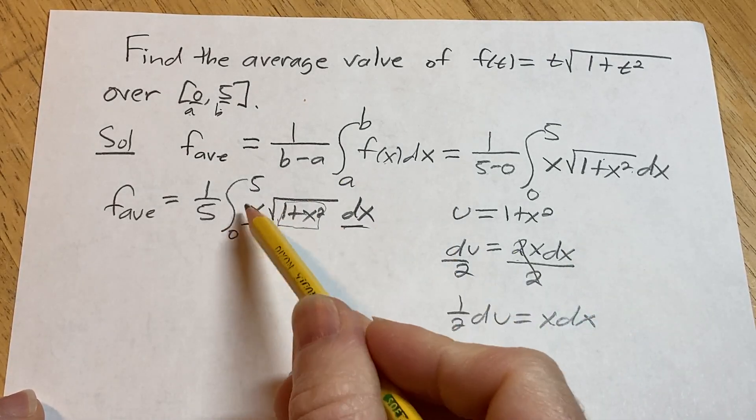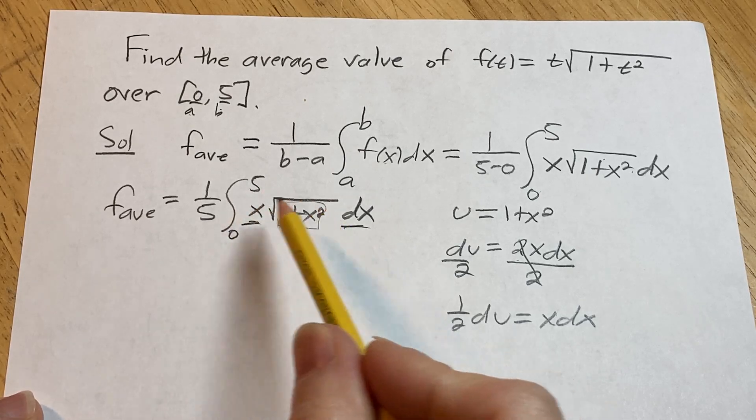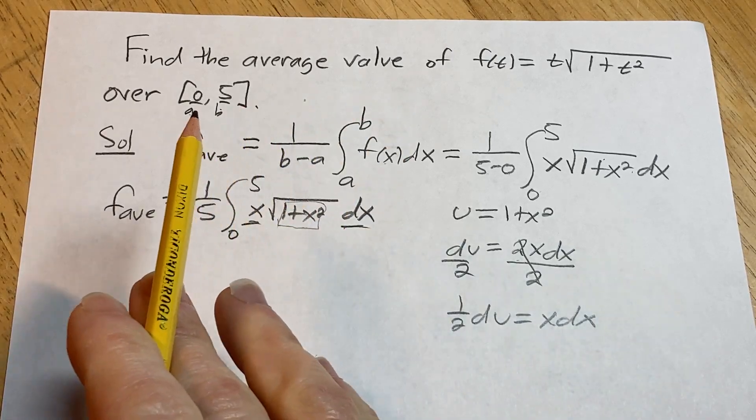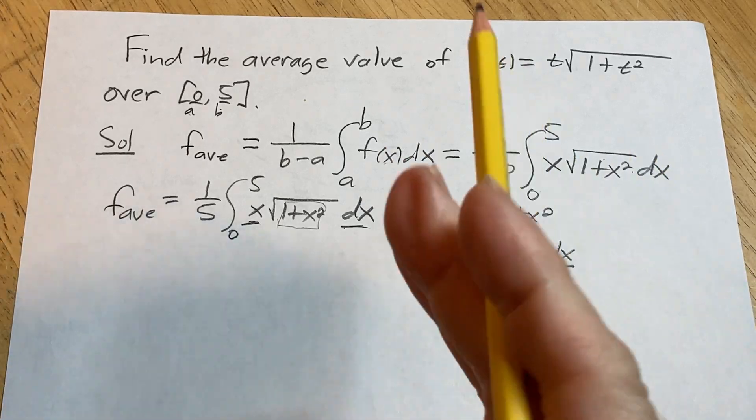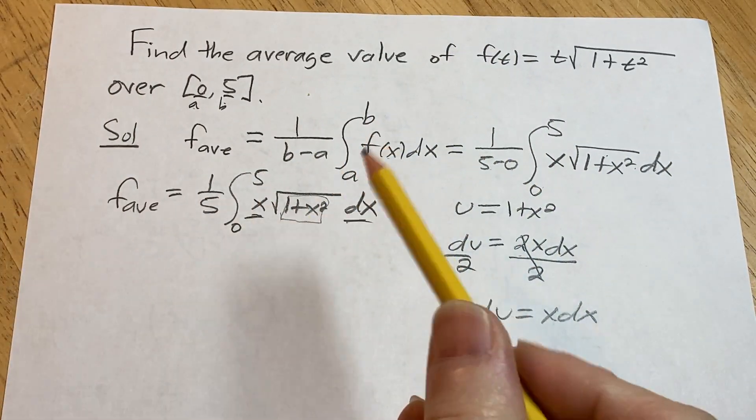However, we're not done, right? This is a definite integral in particular that means that it has limits of integration. So we should change them because these are x limits and we're turning everything into u limits, right? Everything is turning into u. We're doing a change of variables, right? We're going from the x variable to the u variable. So that means that the limits should be u limits.